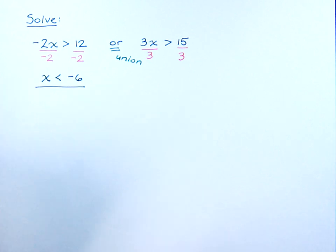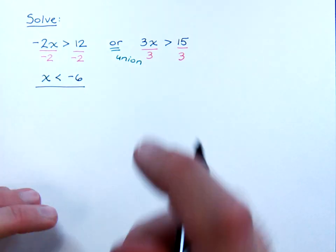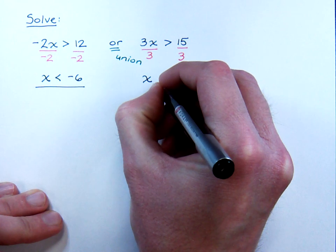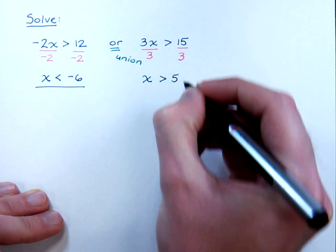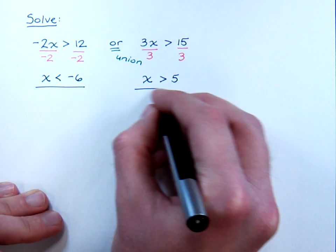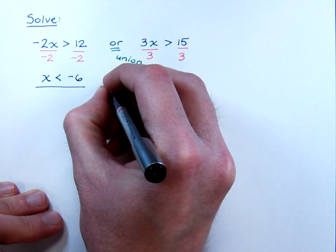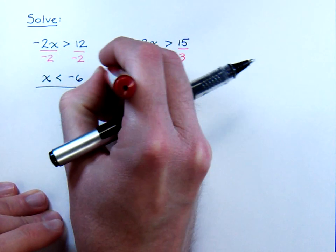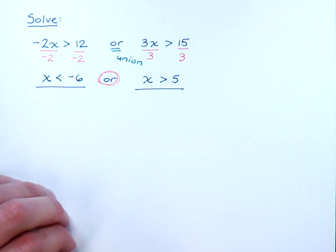Remember, you do not divide by the variable, just the coefficient. And this gives me that x is greater than 5. So now we have these two simpler inequalities, and we do remember that we are having a union, because of the word or.